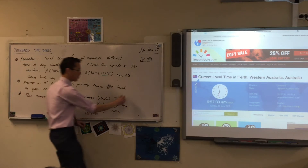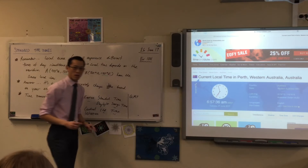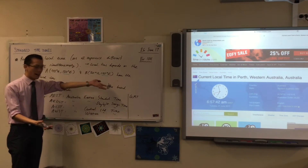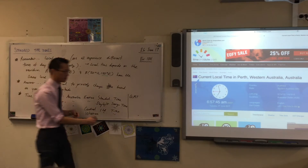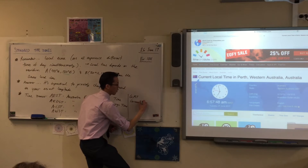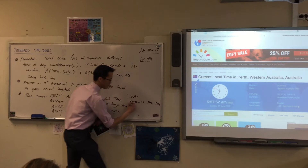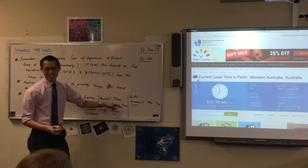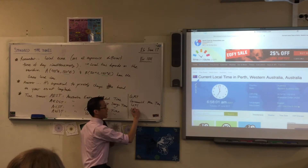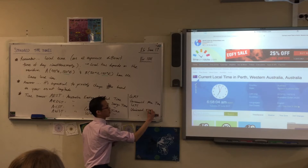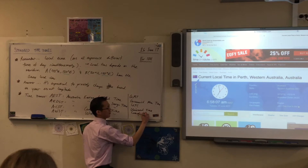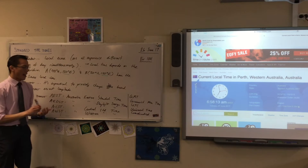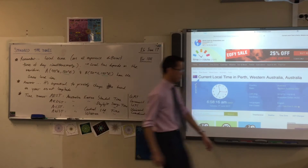So GMT is Greenwich Mean Time, but it's not called GMT anymore officially — even though we keep on saying it. It's nice because then you know where it's based. What we've replaced it with is UTC, which I looked up yesterday. It's an awkward acronym — it stands for Universal Time Coordinated. So that's UTC, same as GMT; everything else is measured in relation to it.